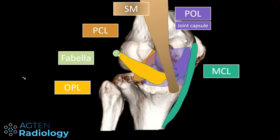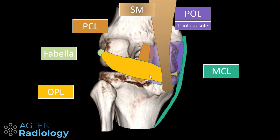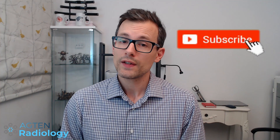It's very thin and sometimes not really visible on MRI. Here in the posterior view, we again have the MCL, the PCL, and everything in between is the posterior medial corner: the semimembranosus tendon, the joint capsule with the thickening of the posterior oblique ligament blending in, the deep layer of the MCL, the PCL, the fabella, and the oblique popliteal ligament.